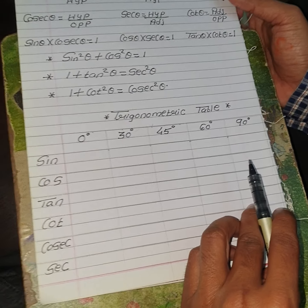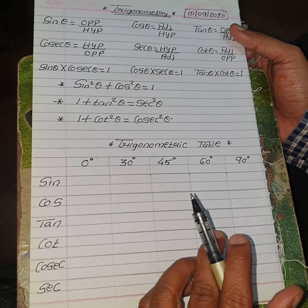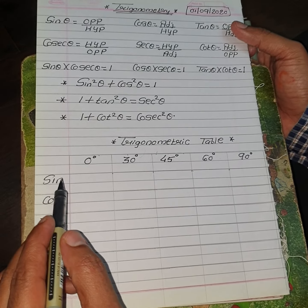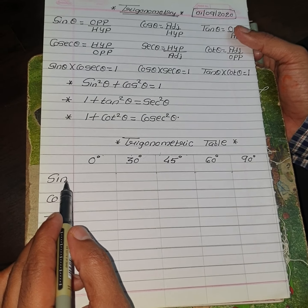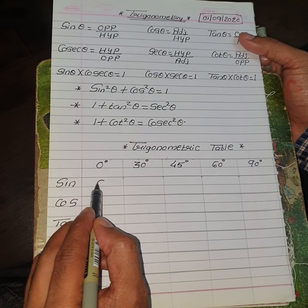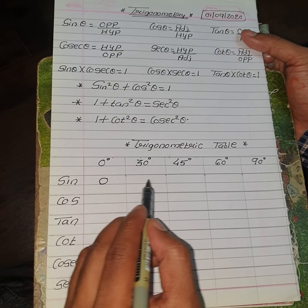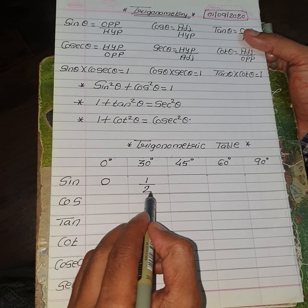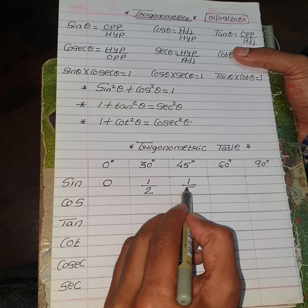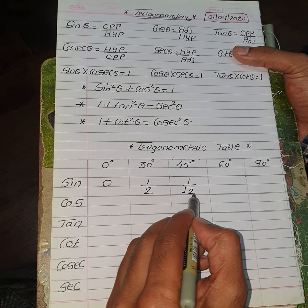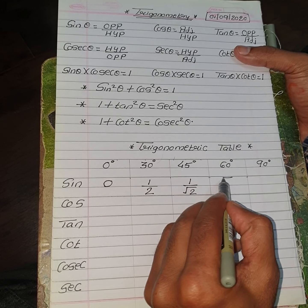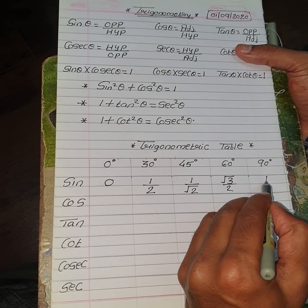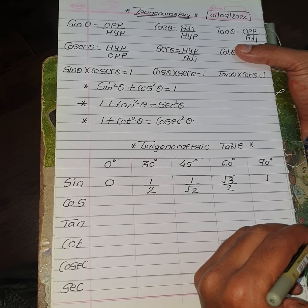Now let us see how to remember this Trigonometric Table. You have to just learn the values for Sin. Sin 0 is 0. Sin 30 is 1/2. Sin 45 is 1 upon root 2. Sin 60 is root 3 upon 2. And Sin 90 is 1.